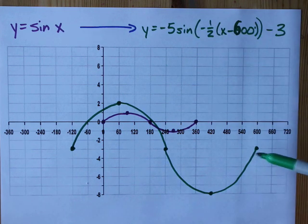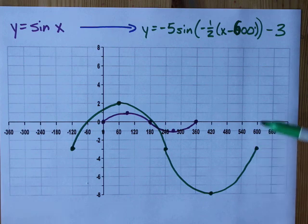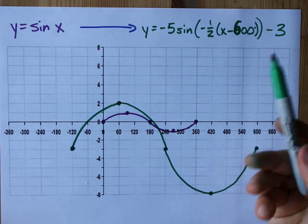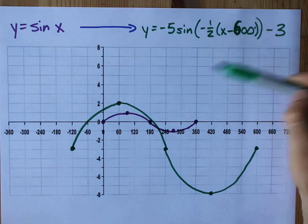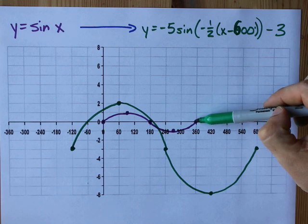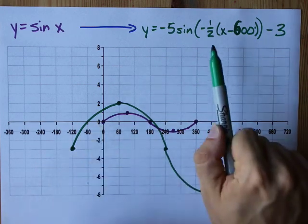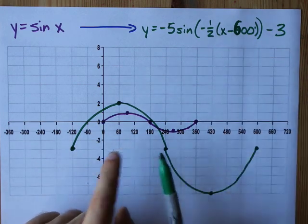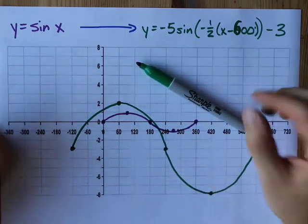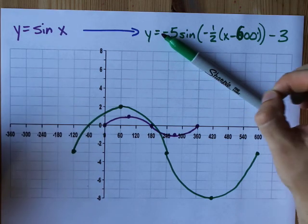And the amplitude is 5. It goes 5 below the middle and 5 above the middle. The only other thing I like checking myself here is that the period looks about right. The period originally was 360. That's how wide it was. And we stretched it by 2. So it should look doubly as wide. And, oh, yes, it does. Gut check, turns out. You know what that means. We're probably right.